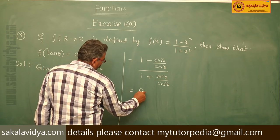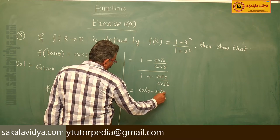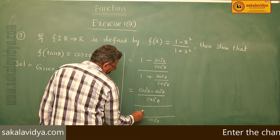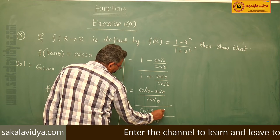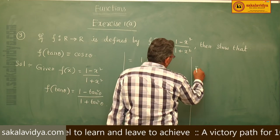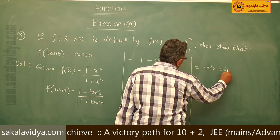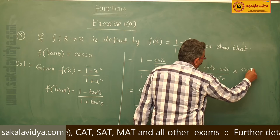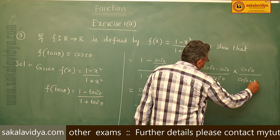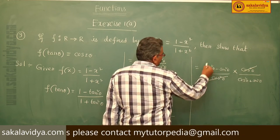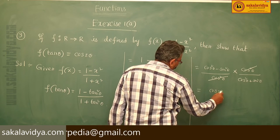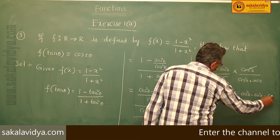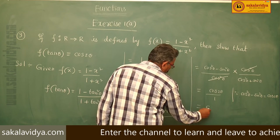This can be written as (cos²θ - sin²θ) / cos²θ divided by (cos²θ + sin²θ) / cos²θ. The cos²θ terms cancel, giving (cos²θ - sin²θ) / (cos²θ + sin²θ). Since cos²θ - sin²θ = cos 2θ and cos²θ + sin²θ = 1, this equals cos 2θ.